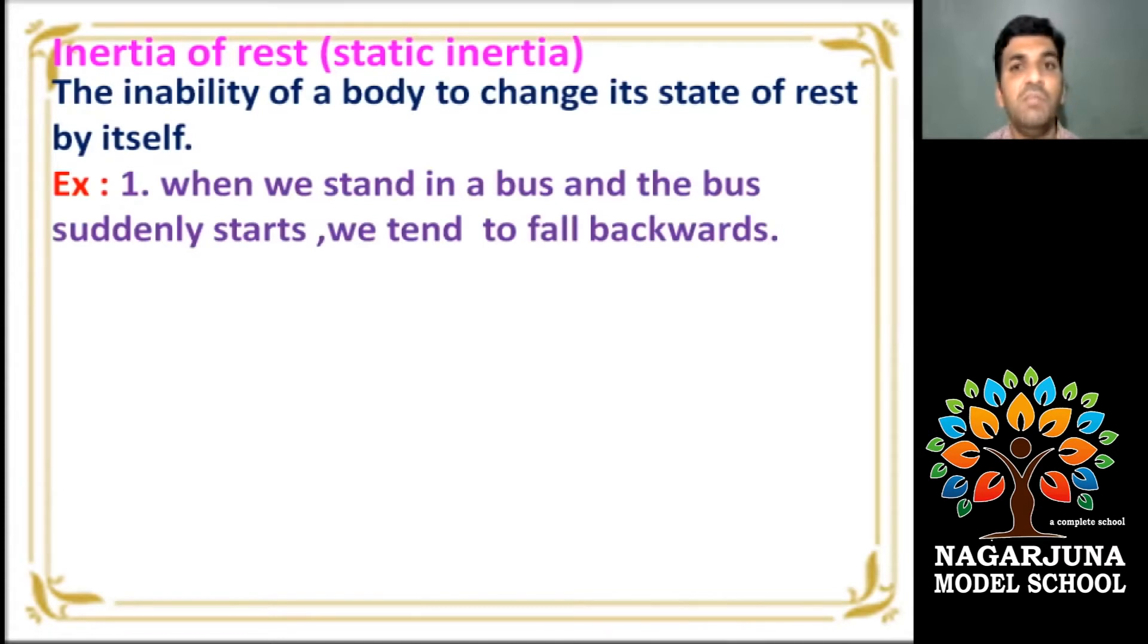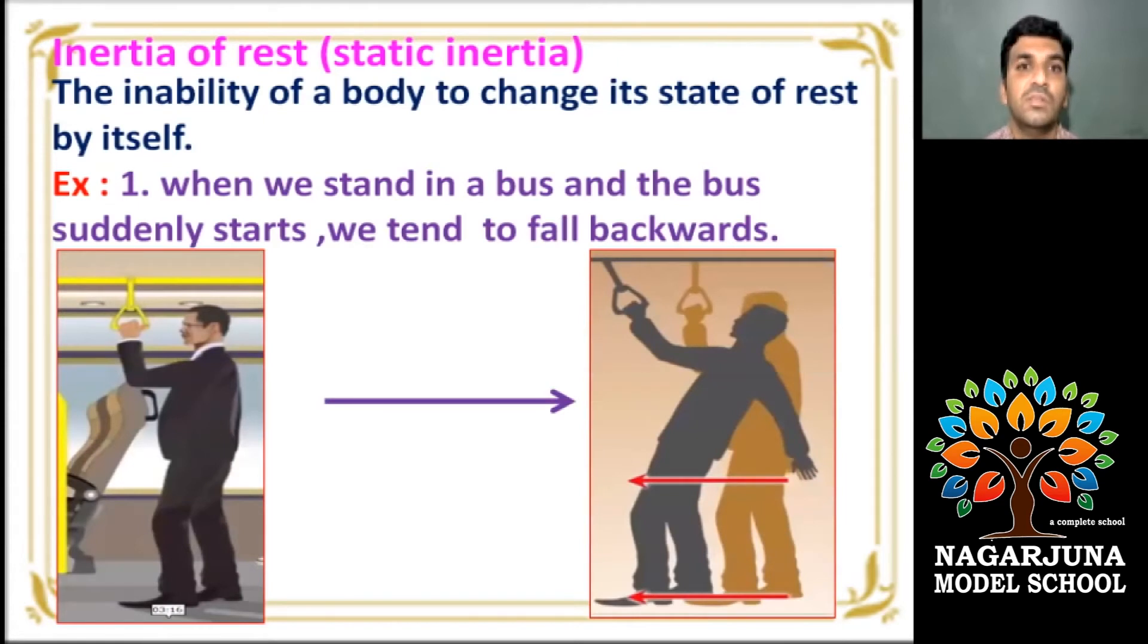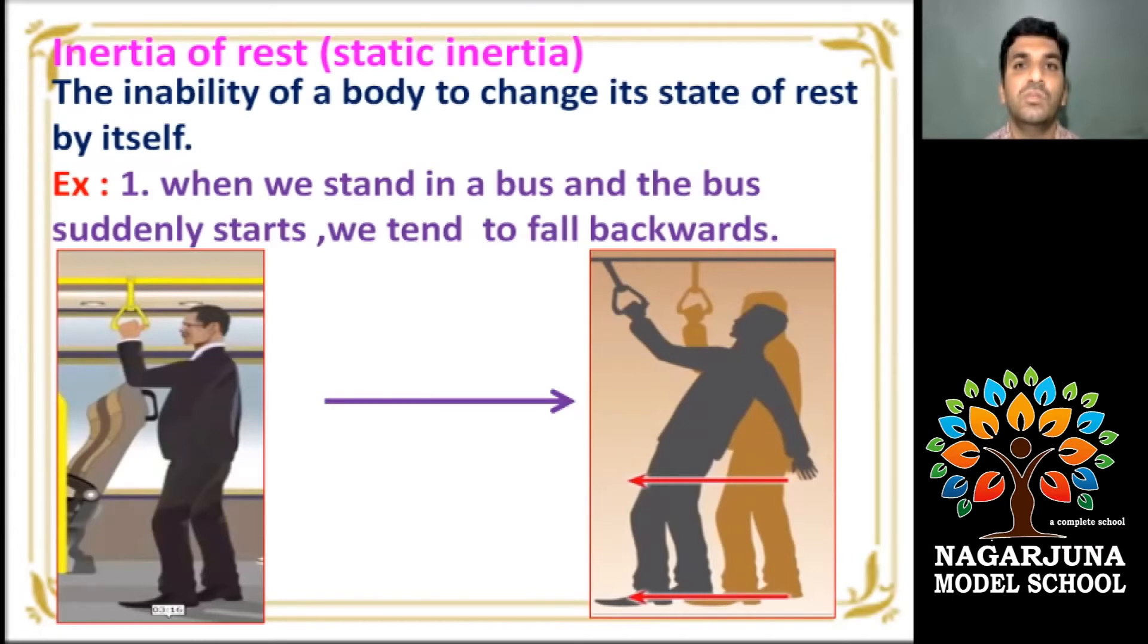The inability of a body to change its state of rest by itself is called static inertia. When we stand in burst and the burst suddenly starts, we tend to fall backwards. A person here standing in burst, the burst suddenly starts. He tend to fall backwards due to inertia of rest. Before that, his body is at rest. His body wants to be at rest. But when burst starts suddenly, he tend to fall backwards.